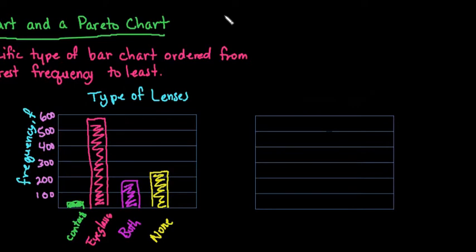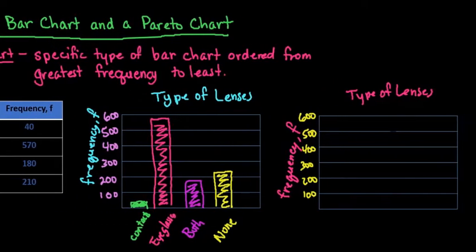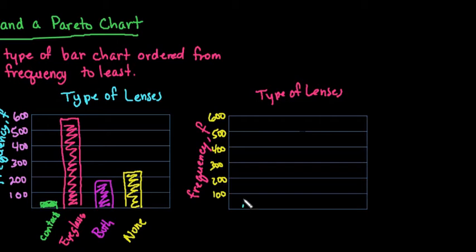For a Pareto chart you follow exactly the same thing. You would still label it type of lenses. But with a Pareto chart it has to be ordered from greatest frequency to least. So this would still be my frequency on this side. I'm still going to count by the same thing. You would set it up exactly the same way. But here it's important that you start with the category that has the most in it. So since the glasses was the category that had the most in it, since the glasses had 570, that's what we would have to start with in the Pareto chart. So with the Pareto chart you always start with the highest first.